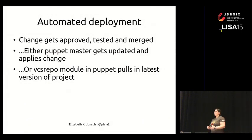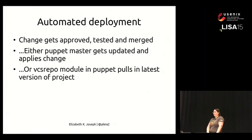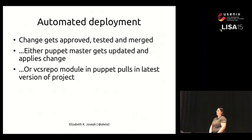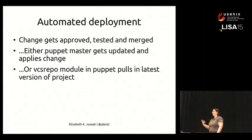We also do automated deployment — we're continuously delivering everything on our infrastructure. A change gets approved, goes through all the testing with Zuul and Jenkins, then lands in trunk and is immediately put into production. Our theory is that we tested it, so it should work. We do have the benefit that our customers are developers on the OpenStack project, so they're slightly more forgiving than a paying customer. We don't have catastrophic failures all that often. Deployment is done either through Puppet, which is always pulling from trunk, or via a module in Puppet that updates the Git repository whenever that software is updated.